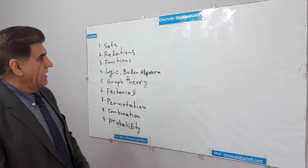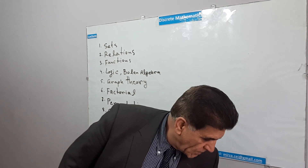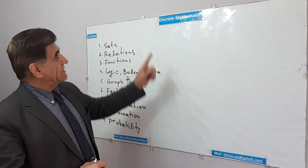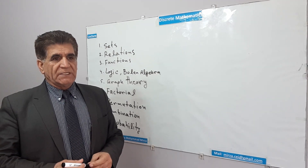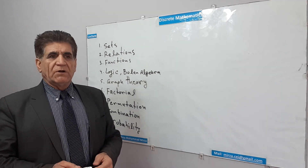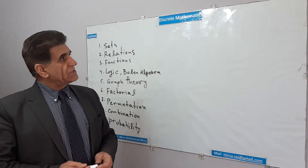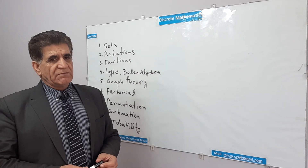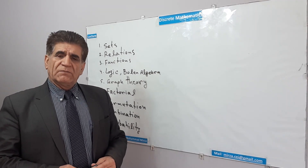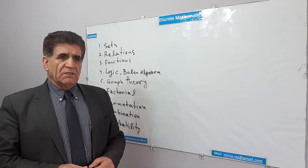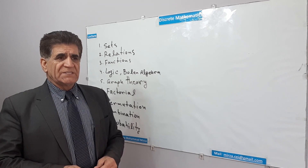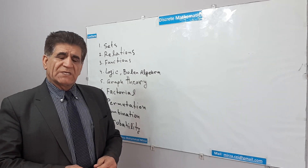The first thing I want to record is Discrete Mathematics. Discrete Mathematics is one of the most important subjects in computer science. In all countries, we are working on computer science and discrete mathematics as part of the curriculum. We will record all of them so that we can use them.